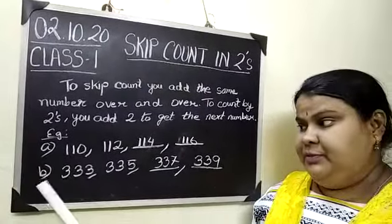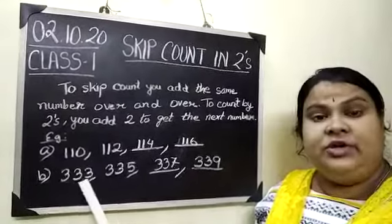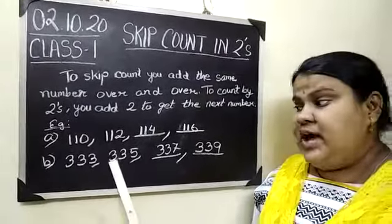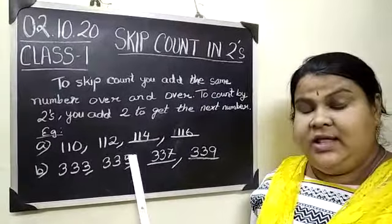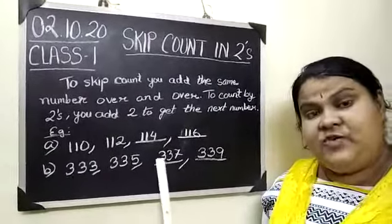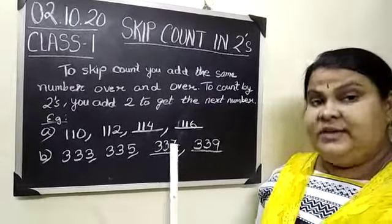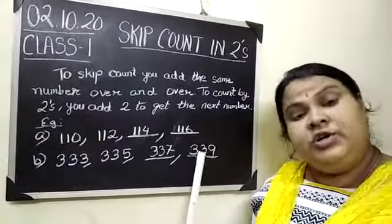Now come to the second example. We have 333. When we add 2 to it, it becomes 335. Then again adding 2, it becomes 337. And again by adding 2, it becomes 339.